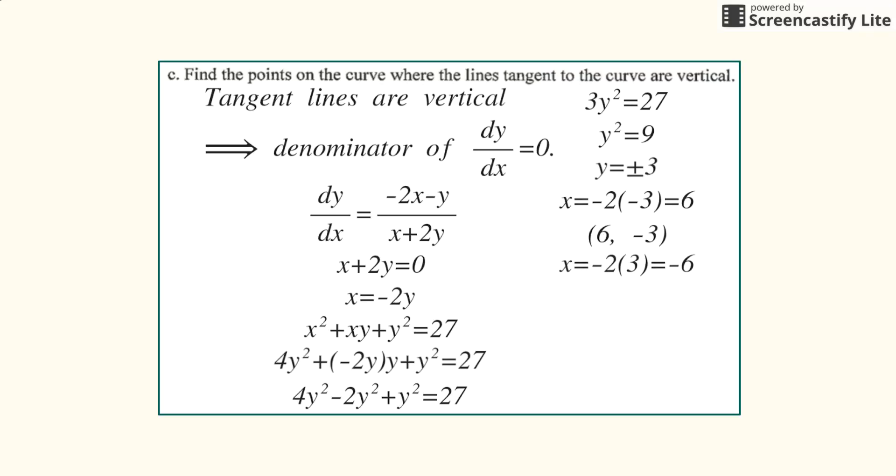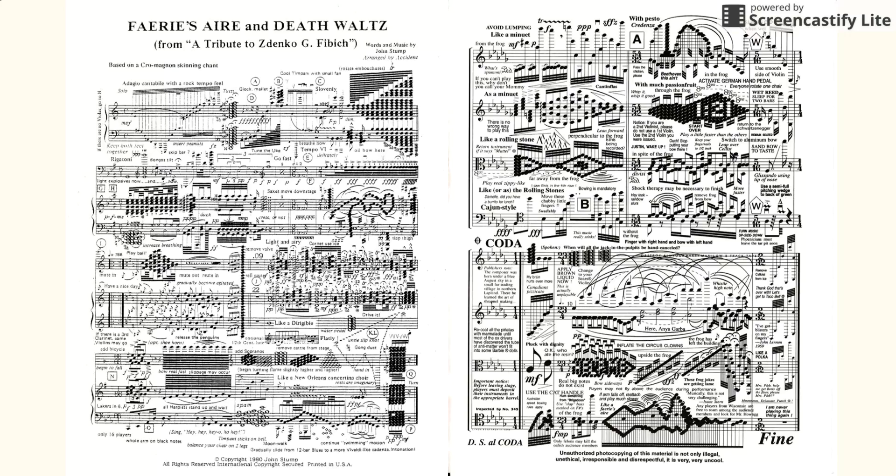And then you plug in positive 3, so that would be negative 6. So another point at which the line tangent to the curve is vertical is negative 6 comma 3. And those are the final answers. Thanks for watching and good luck on the AP exam.